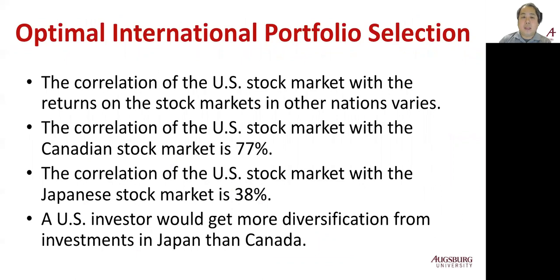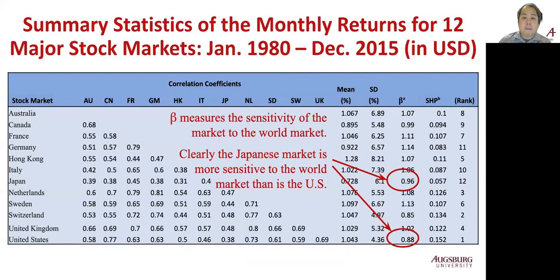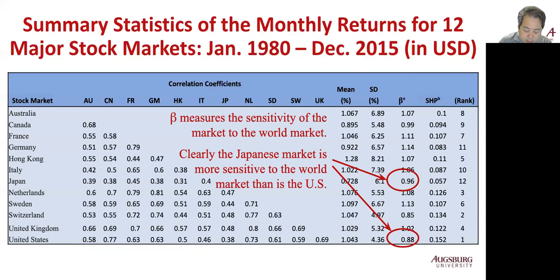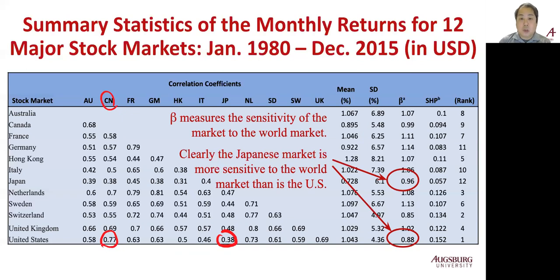How do we select the optimal international portfolio? The correlation of the U.S. stock market with other nations varies. For example, the U.S. versus Canada is 0.77, while the U.S. versus the Japanese market is 0.38. So you get more diversification from investment in Japan than Canada. Geographically and economically, the Canadian market is more related to the U.S. market compared with Japan. It's very obvious that if you invest in Japan rather than Canada, you can achieve more diversification.